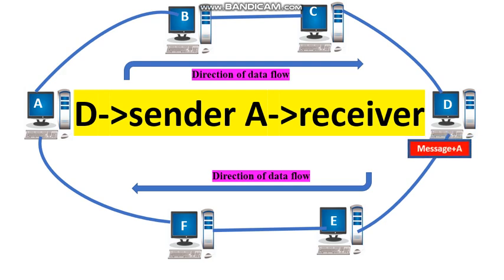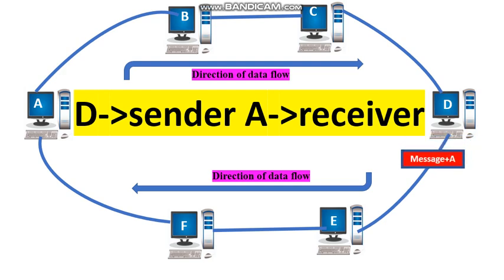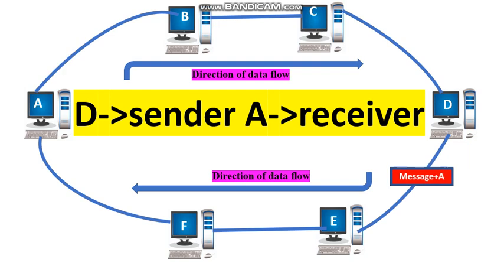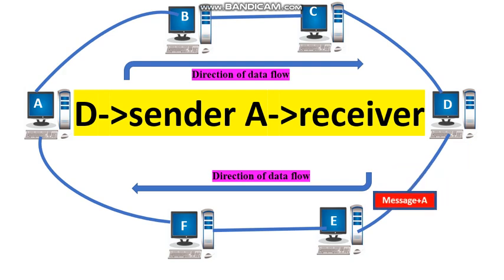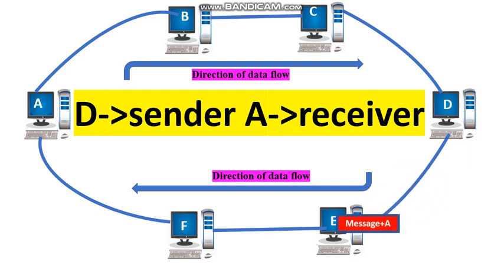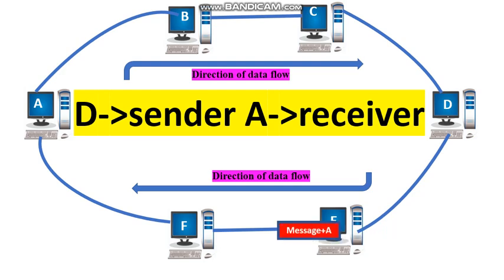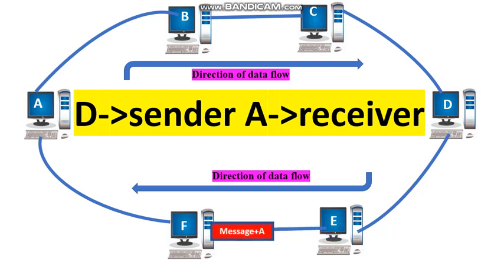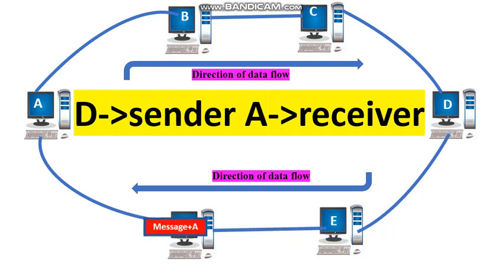Station D inserts the message and destination address A into the empty token. Then, the token travels along the ring through all the stations. The token is examined by each successive station to check whether that particular message is intended for that station or not.